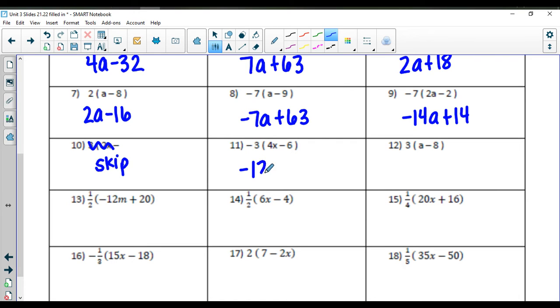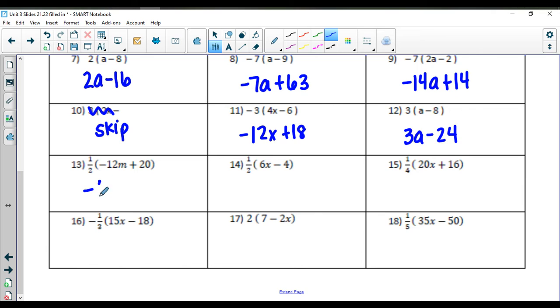In number eleven, we're going to have negative twelve x plus eighteen. In number twelve, we have three a minus twenty-four. In number thirteen, we're going to get negative six m plus ten.